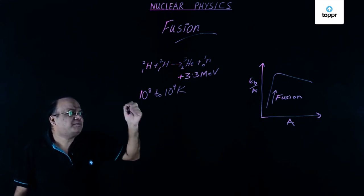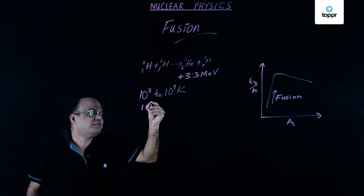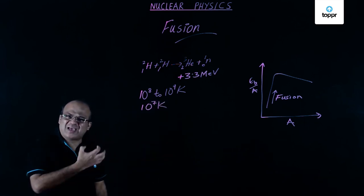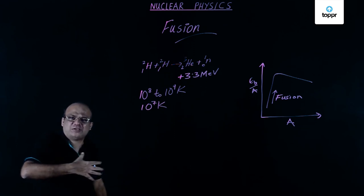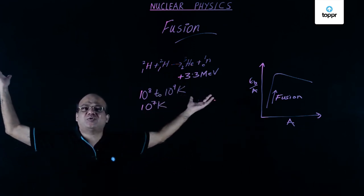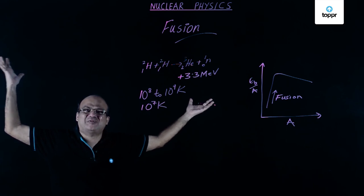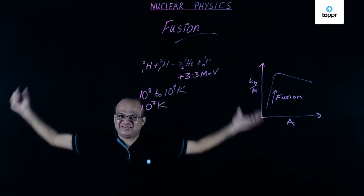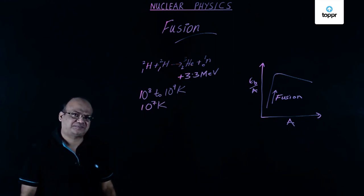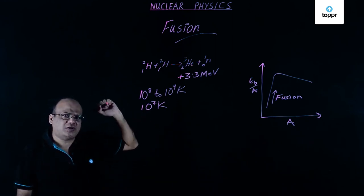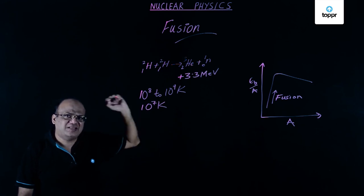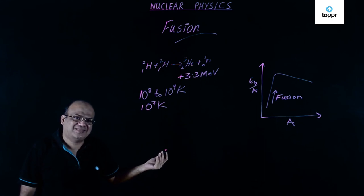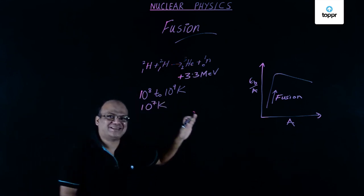In the sun the temperature is a little lower — the core temperature is around 10⁷ Kelvin. Fusion reactions take place there at a slightly lower temperature because of the huge number of deuterium nuclei present. So many nuclei are there that they collide and the reaction takes place. Nuclear fusion is the source of energy in the hydrogen bomb, the sun, and the stars.